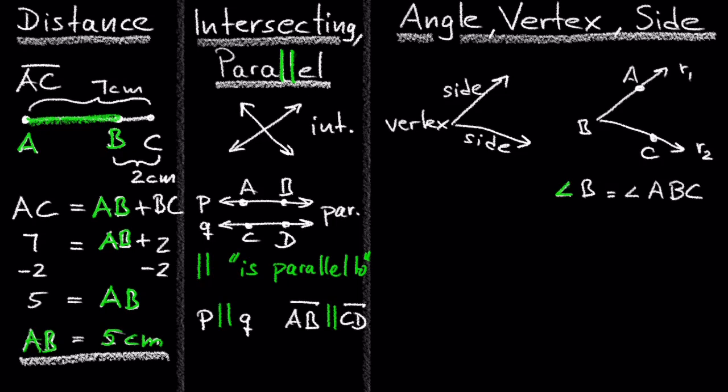This is the symbol for angle. Notice that the angle is named by the vertex, or the vertex is the second point listed when the angle is named by giving three points. So angle ABC could also be called angle CBA.